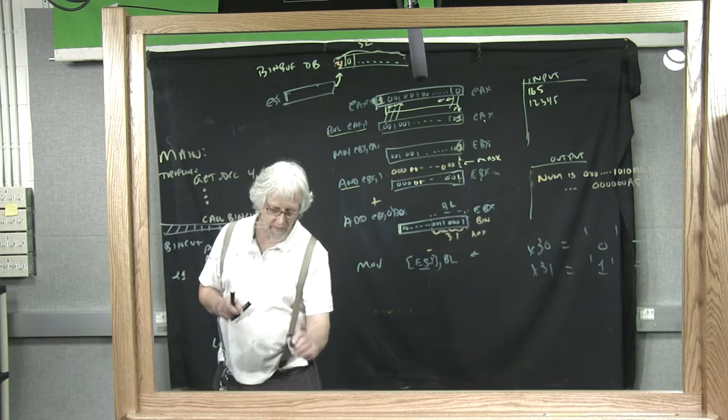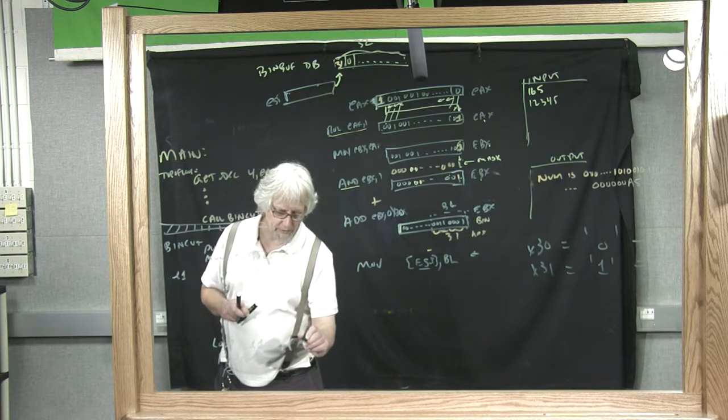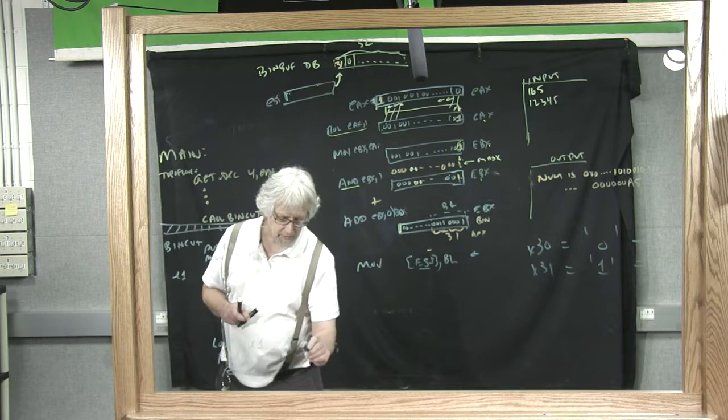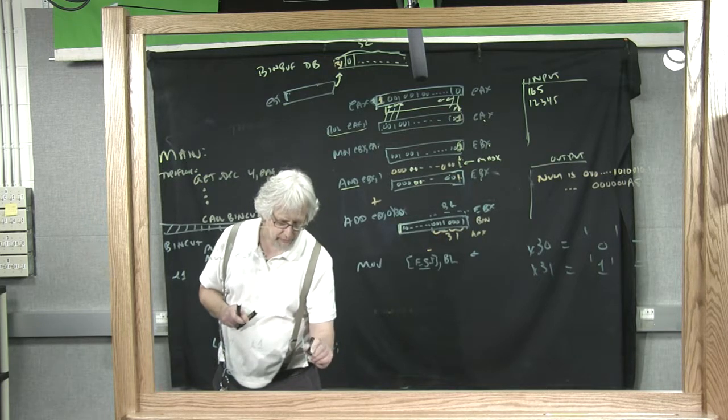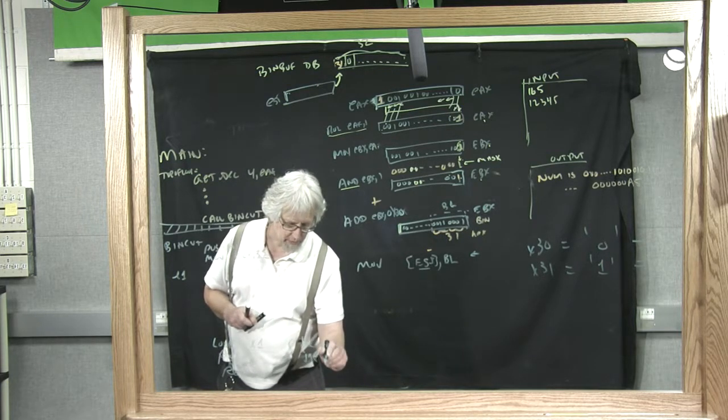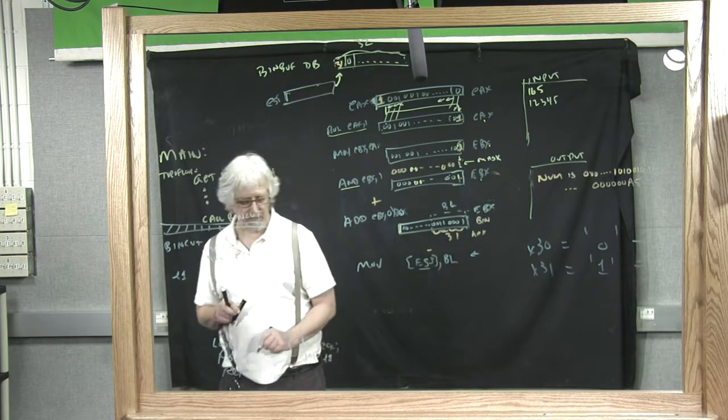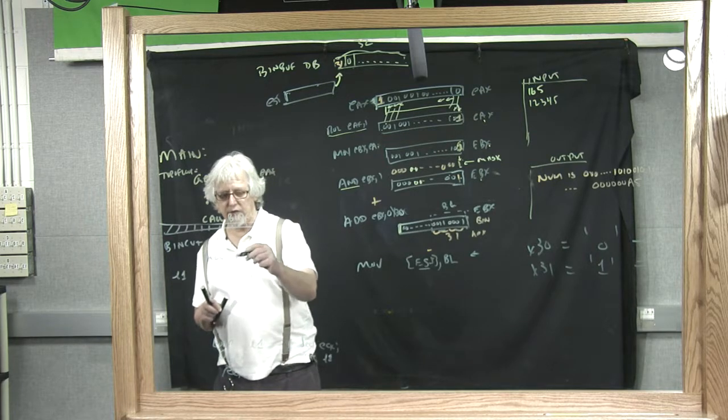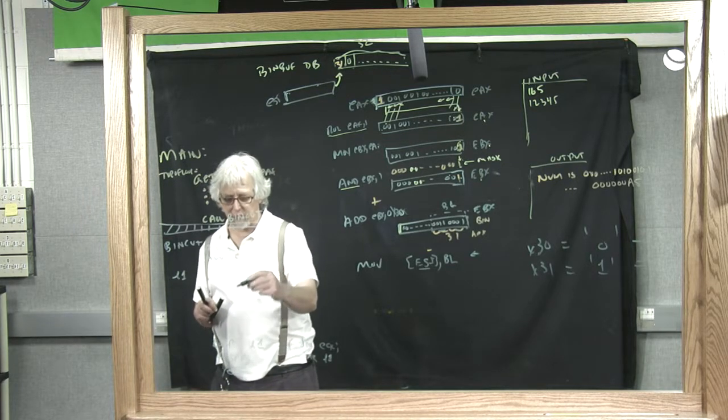This is the same as decrement ECX. So ECX is 32, then we're going to fall down through here.